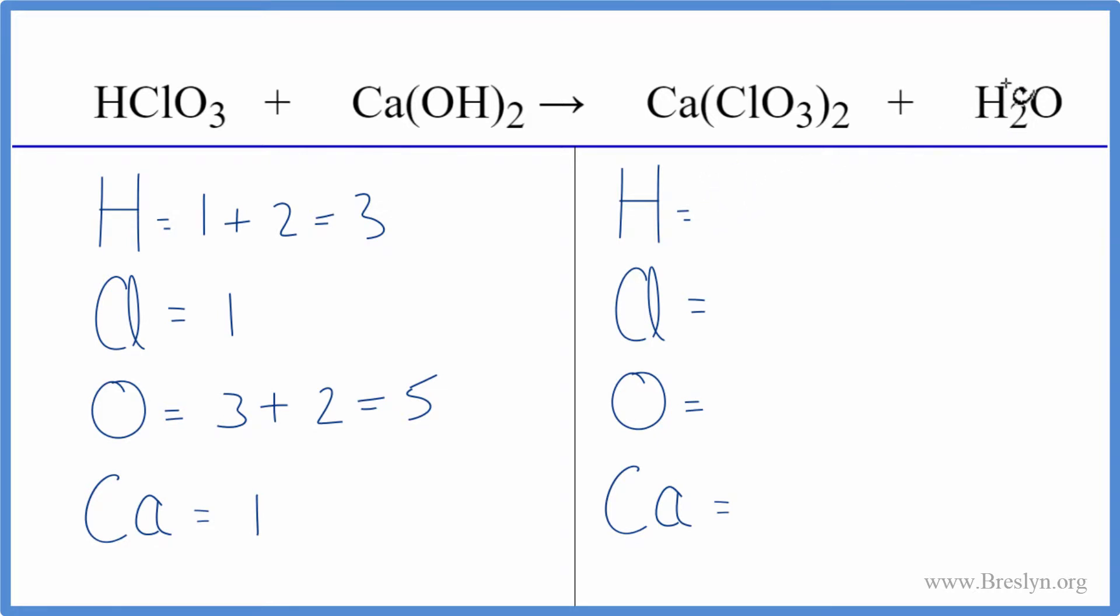On the product side we have two hydrogens, two times the one chlorine, so two chlorines. Oxygens: two times the three is six, plus don't forget this one out here—that gives us seven, and then one calcium.